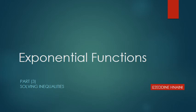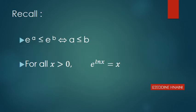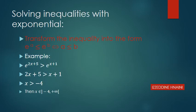Exponential functions, part 3: how we solve inequalities with exponential functions. First, if we have e^a less than or equal to e^b, then a is less than or equal to b. Also, every positive number x can be written as e^(ln x). To solve inequalities with exponentials, we must transform the inequality into the form e^a ≤ e^b, then conclude a ≤ b.